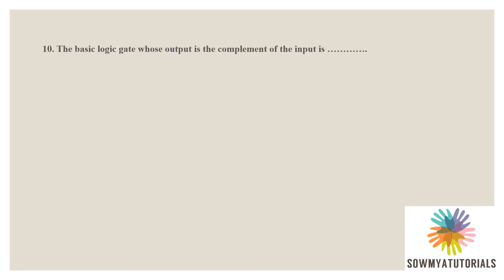The next question: the basic logic gate whose output is the complement of the input state. Options: OR gate, AND gate, inverter gate, and comparator. The correct answer is option C, inverter gate. The basic gate whose output is the complement of the input state is the inverter gate.